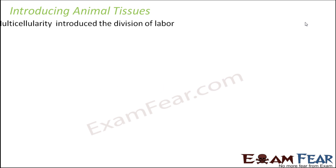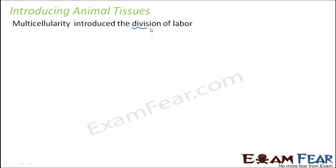When we talk about animal tissues, as soon as multicellularity comes into picture, there are so many cells inside an organism that it gives rise to the concept of division of labor. There are so many tasks to be performed, so you have to divide the tasks among groups of cells — one group of cells will perform one task, another group will perform another task, and so on. So multicellularity introduces the concept of division of labor.